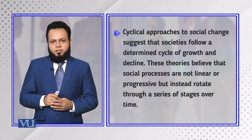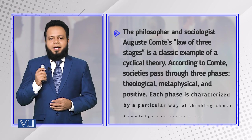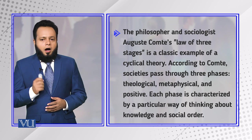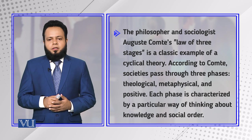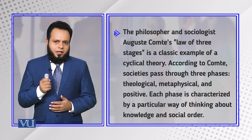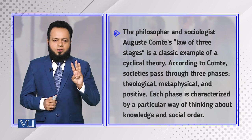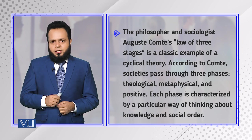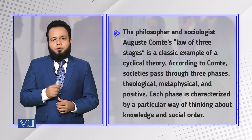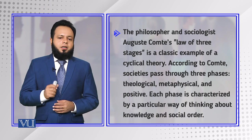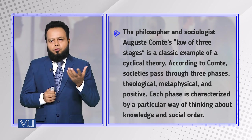Philosopher and sociologist Auguste Comte's Law of Three Stages is a classic example of a cyclical theory. According to him, societies pass through three phases: number one, theological; number two, metaphysical; and number three, positive. Each phase is characterized by a particular way of thinking about knowledge and social order.